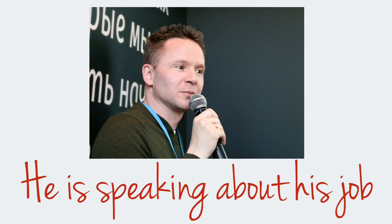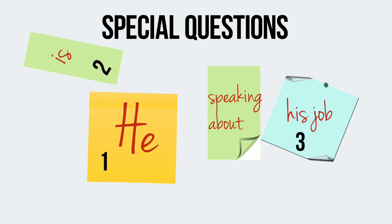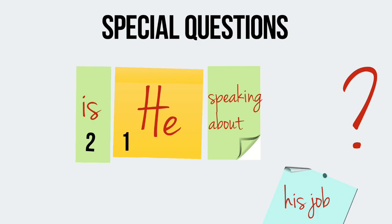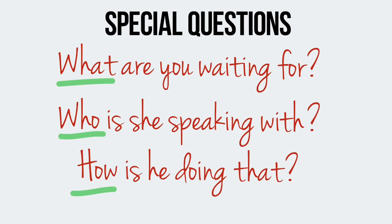Let's take another example. We'll make a special question in present continuous from this sentence: He is speaking about his job. And this is what we need to do to make a special question. Now this is a special question. Repeat after me: What is he speaking about? More examples of special questions in present continuous. Repeat after me: What are you waiting for? Who is she speaking with? How is he doing that?